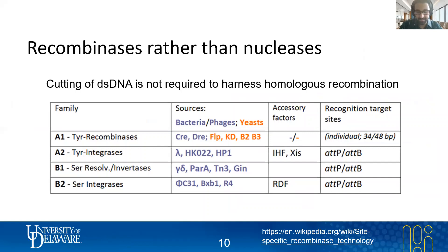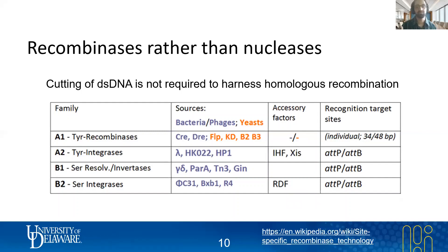Recombineering is mediated by recombinases, which are a different class of enzyme than nucleases. They're not making cuts or double-stranded breaks to DNA — they're utilizing homologous recombination. Whereas when a nuclease makes a cut, there are a couple of different mechanisms that can come into play to repair that break, such as an HDR pathway or non-homologous end joining. But in recombineering approaches, homology is key — it's absolutely required, and generally the more homology you have, the better.